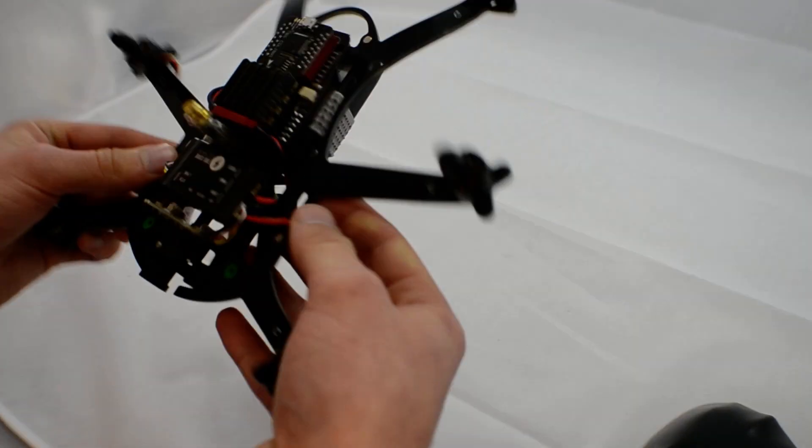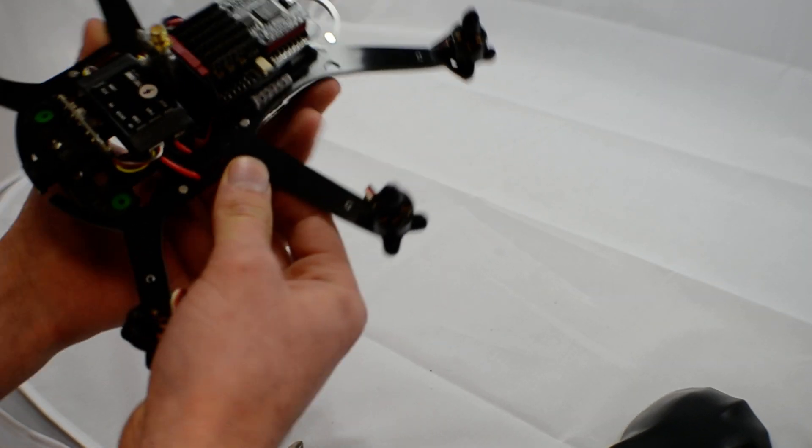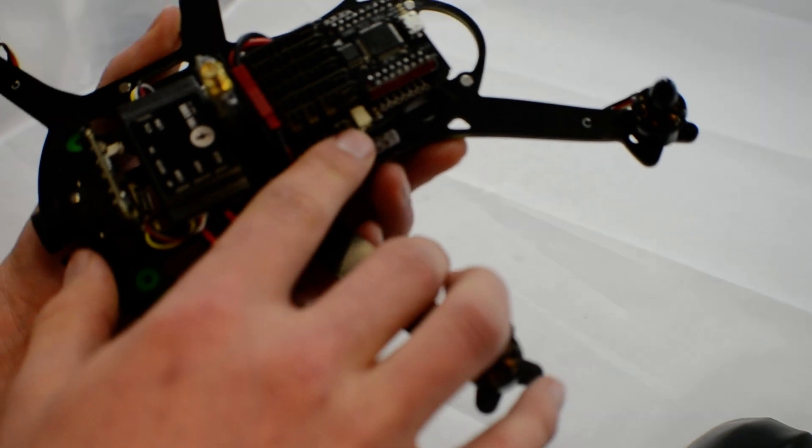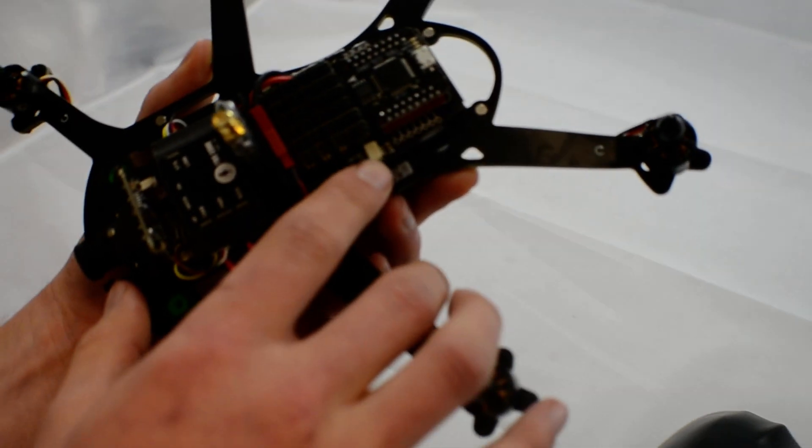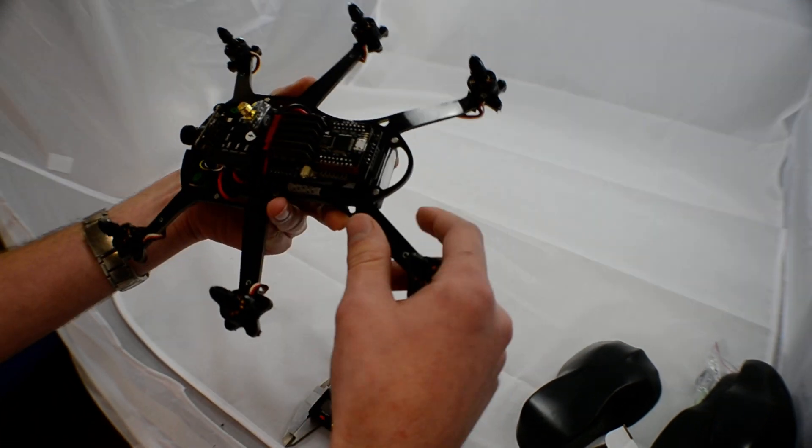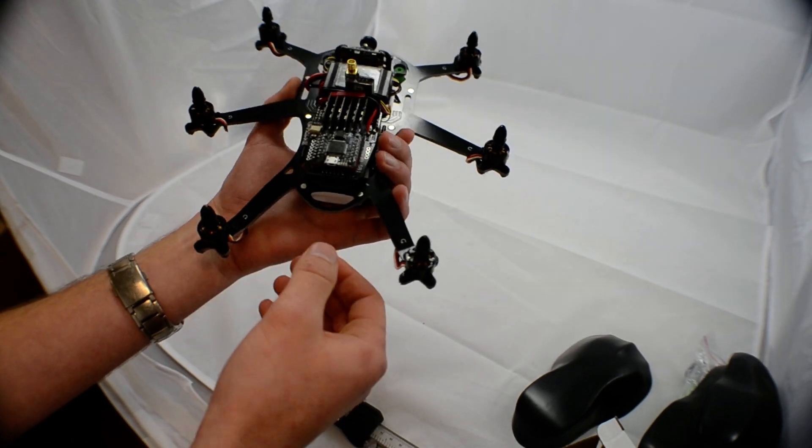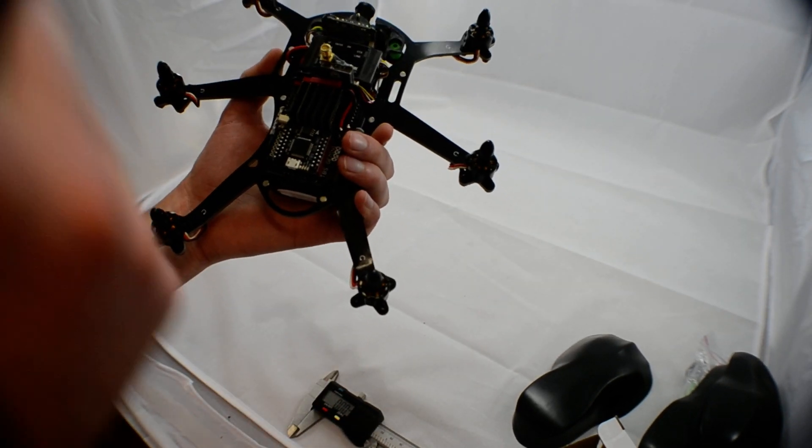Next thing you might ask is how do you connect your receiver. You see here on this port here. That's a PPM input. So TBS supply a PPM cable to go straight into your PPM output on your receiver. And you're good to go.